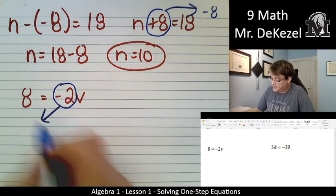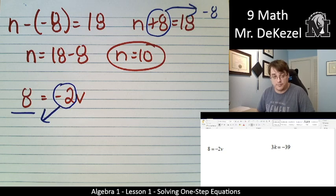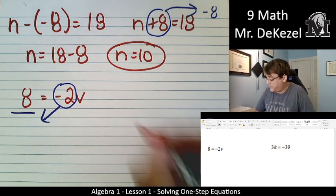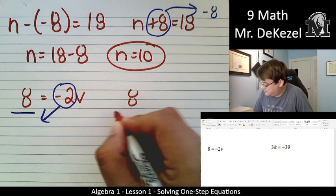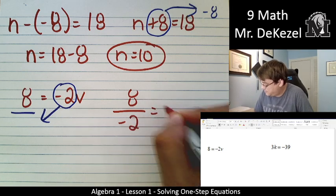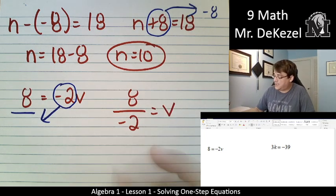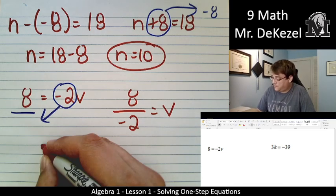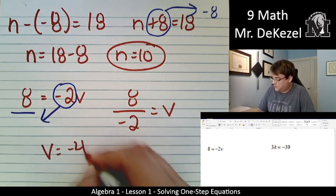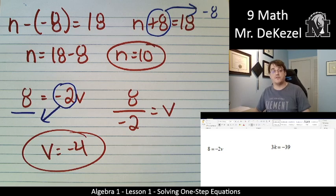So it's on the top on this side. It goes to the bottom on the other side. So we are left with 8 divided by negative 2 equals v. We can do this. 8 divided by negative 2 is minus 4. Therefore, v is equal to minus 4.